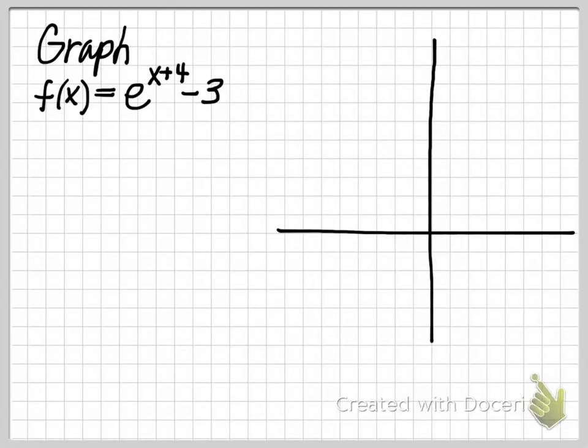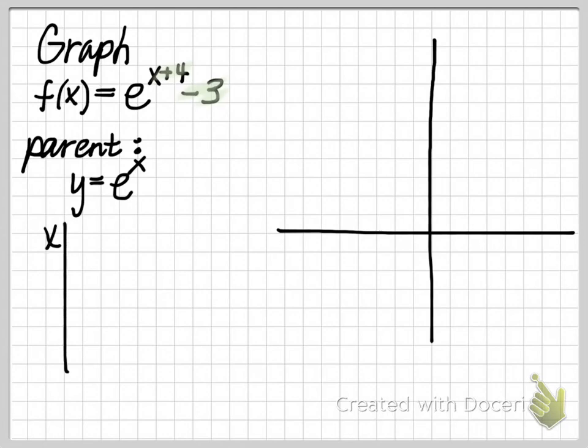To graph the function f(x) equals e raised to the x plus 4 power minus 3, we want to first start by identifying the parent function. If you can remember that the plus 4 and the minus 3 cause shifts for this graph, then what's left, what's remaining, is just e to the x power. So y equals e to the x power is our parent function, and we'll start by working on graphing that function.